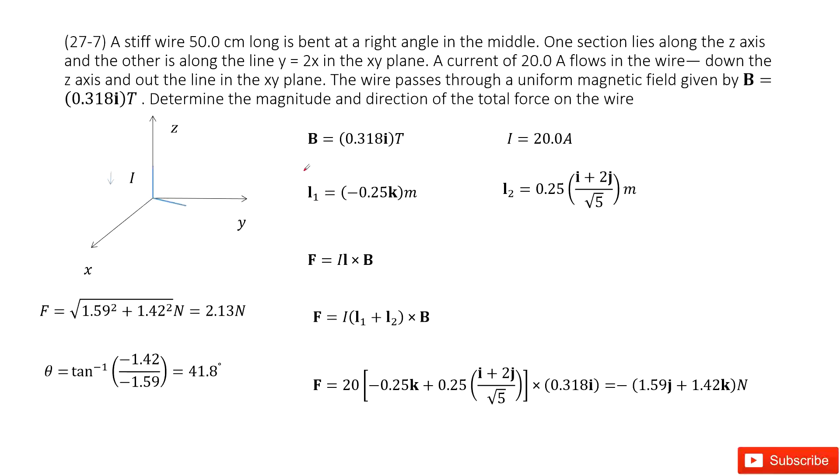The current flows in two directions. First one pointing to negative z, then pointing to the line y equals 2x. And the magnetic field is in the x direction. So how can we do that?